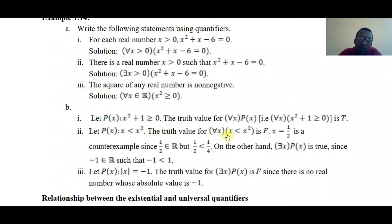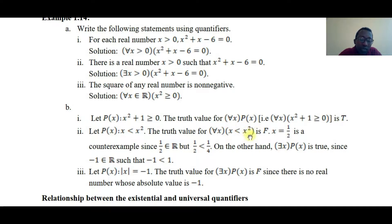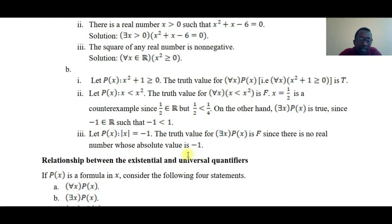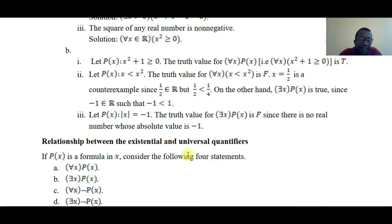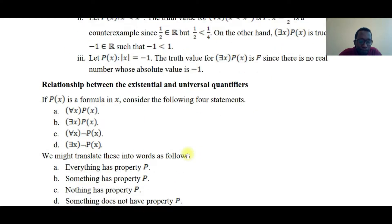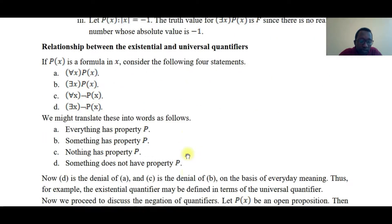For the statement 'for all x in the domain,' checking x equals 1/2: (1/2)² = 1/4. This provides a counter-example to demonstrate when a universal statement is false.